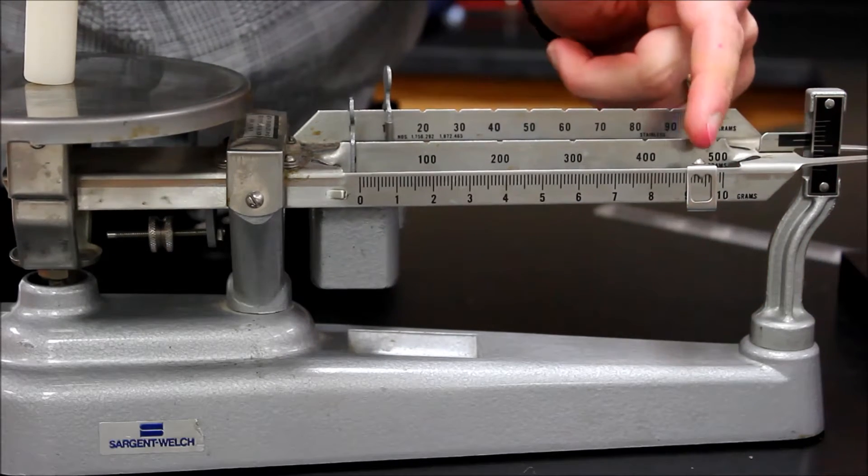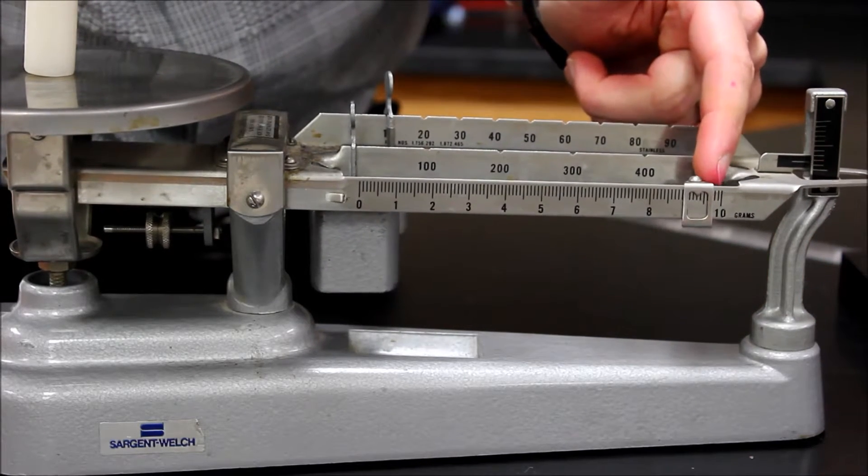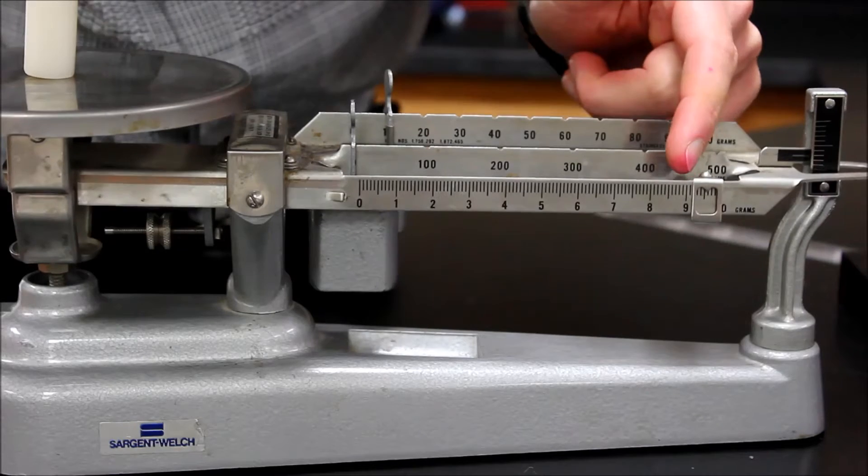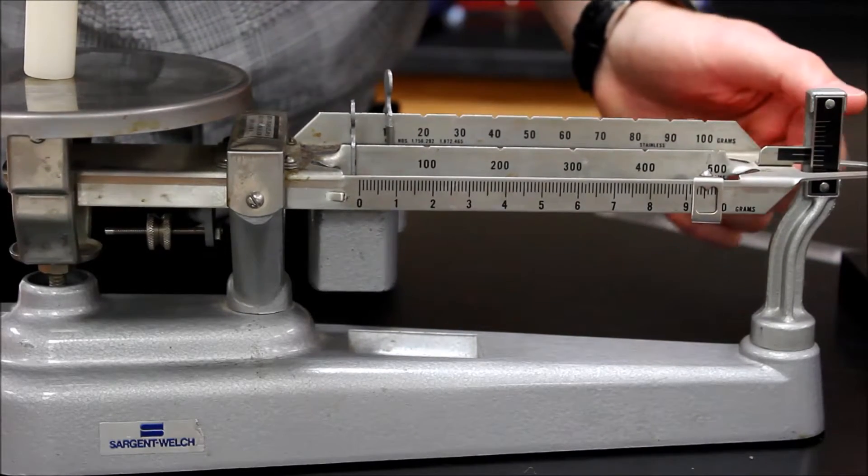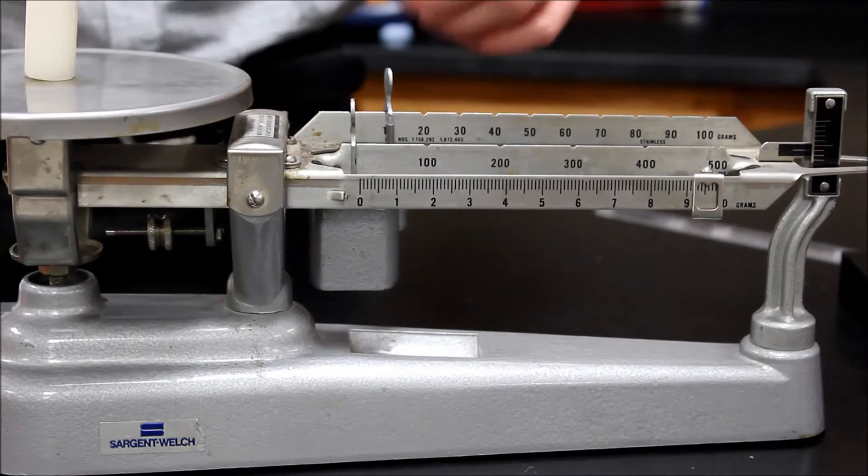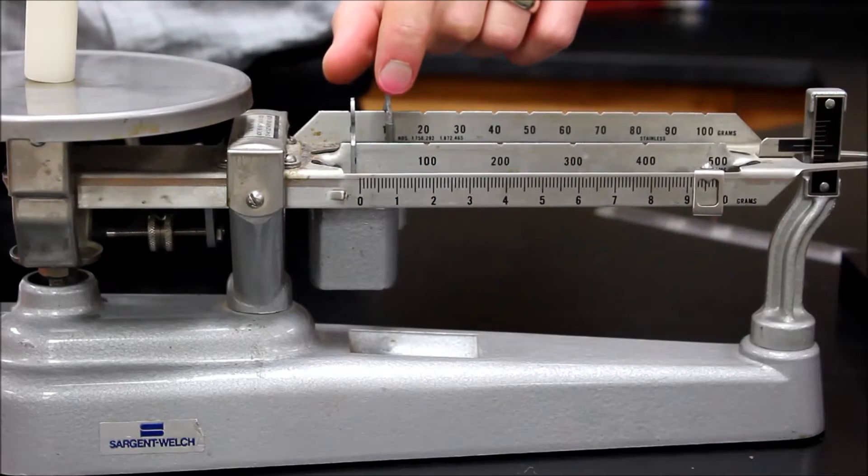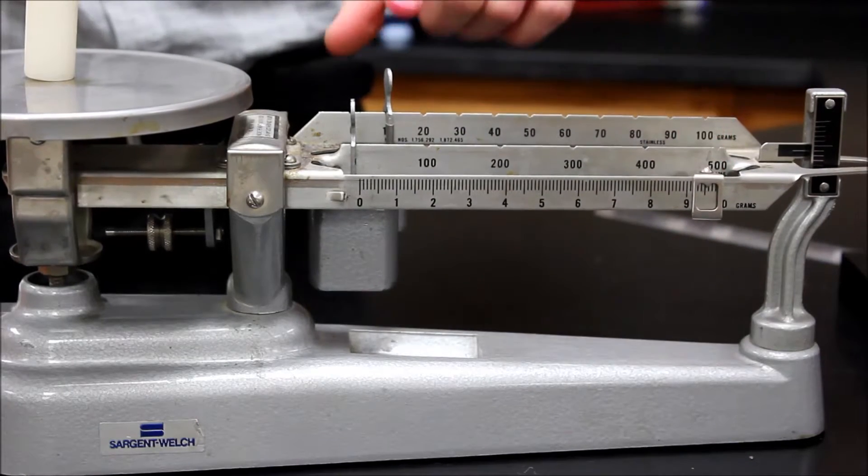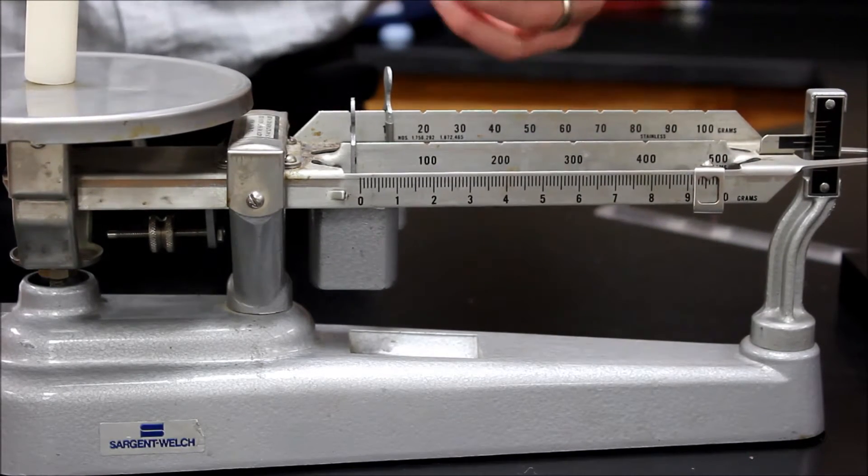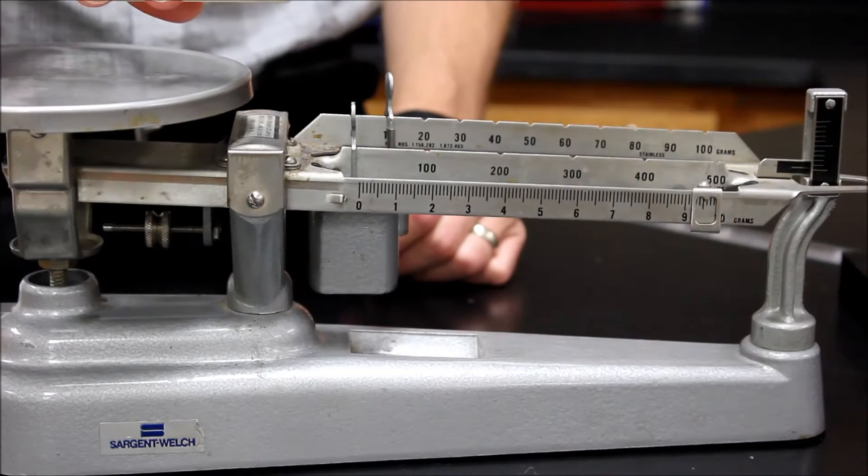And then I'm going to use my smallest one until I get to around where I want to be, maybe around 19 and a half. I got that because I added 10 from this one plus the nine and a half. So 19 and a half is the mass for my candle.